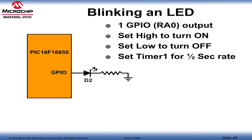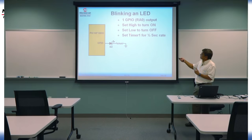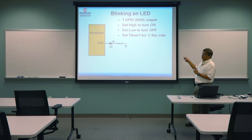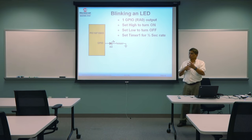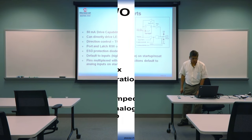From a hardware point of view, we're taking the PIC16F1 device, using one GPIO as an output, and driving it high to turn on an LED. We'll set the GPIO high to turn it on and low to turn it off. We'll configure timer 1 for a half-second rate — a half-second count tells us when to toggle the LED on and off.